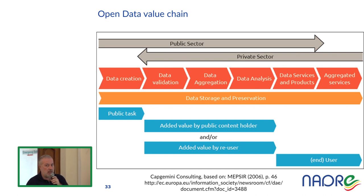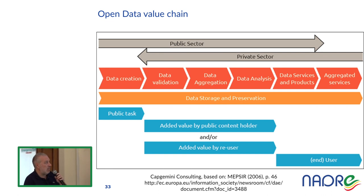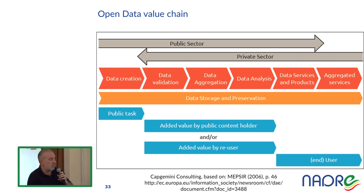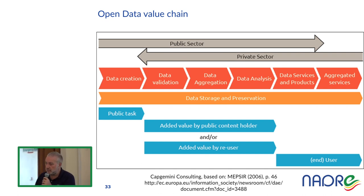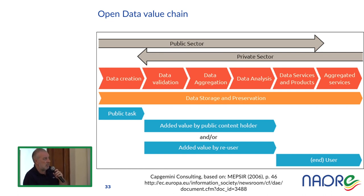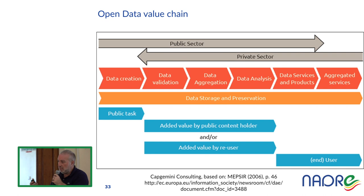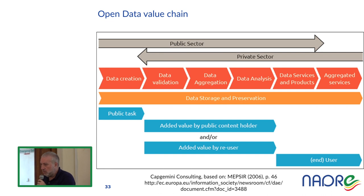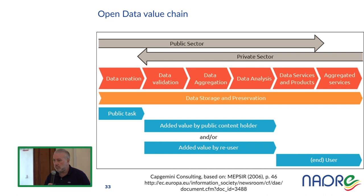When there is an economic value, there is also a value chain. The value chain involves the public sector, universities, research organizations, and the private sector — companies, start-ups, new economy companies. For the public sector, the most important roles are data creation, data validation, data aggregation, and analysis. Then the private sector can come in with aggregations and production of services that provide stakeholders with applications to analyze open data and make better decisions.